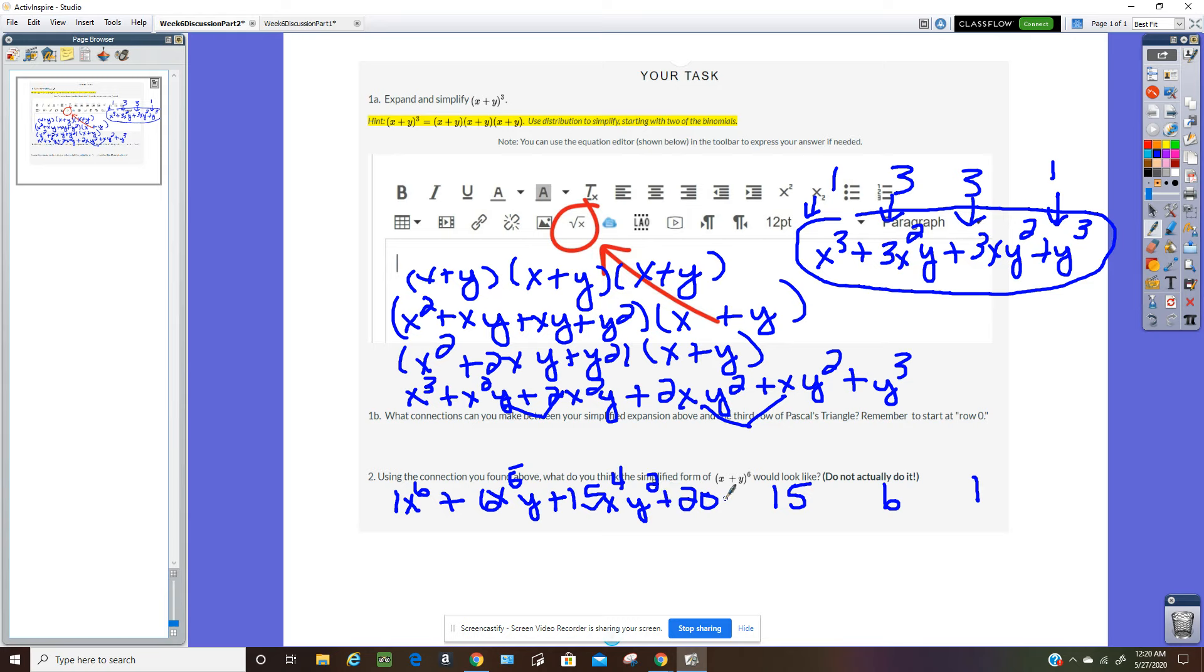And then plus 20, x cubed, y cubed, and then plus 15, x squared, y to the 4th, plus 6, x, y to the 5th. And then plus 1, y to the 6th. I don't have to multiply this all out. I can just use Pascal's triangle.